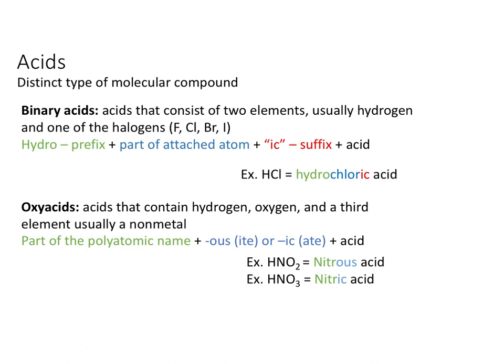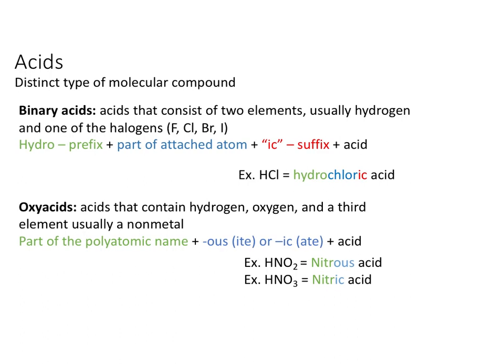Binary acids are a type of acid that consists of two elements — hydrogen as well as usually one of the halogens: either fluorine, chlorine, bromine, or iodine. You'll see a chemical structure with hydrogen and then that halogen attached. The way we name these species is first we use the prefix 'hydro,' then part of the non-hydrogen atom's name, and add an '-ic' suffix to that portion.